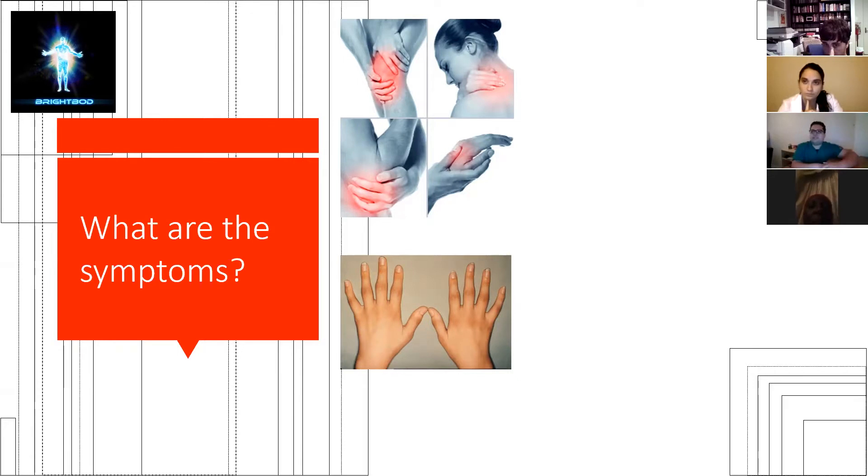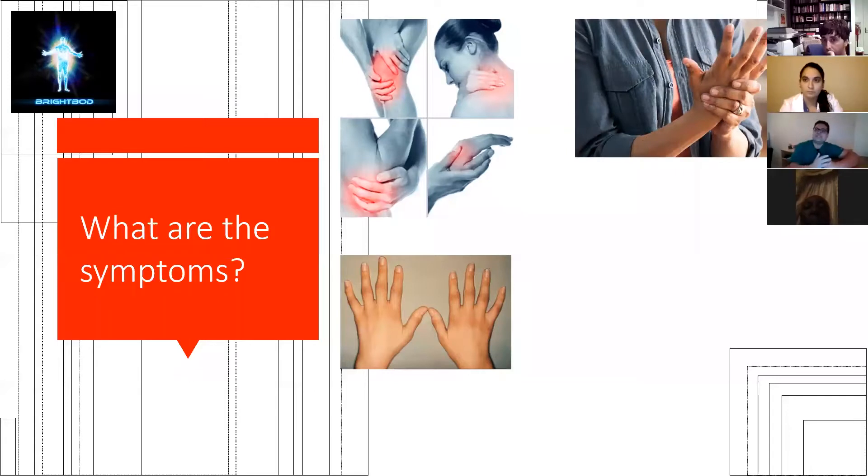Of course, you don't see any deformity, which is very important. Later we're going to talk about rheumatoid arthritis. Stiffness of the joints is also very, very common.